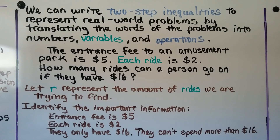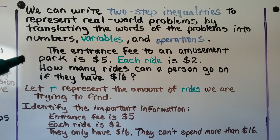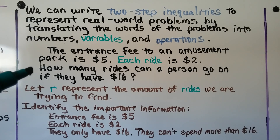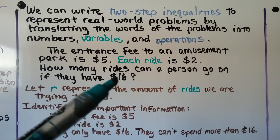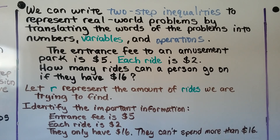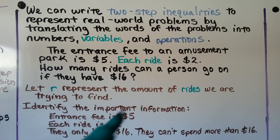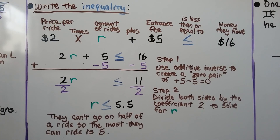We can write two-step inequalities to represent real-world problems by translating the words into numbers, variables, and operations. The entrance fee to an amusement park is $5, each ride is $2, so how many rides can a person go on if they have $16? We're going to let R represent the number of rides. The entrance fee is $5, each ride is $2, and they only have $16 — so they can't spend more than $16.